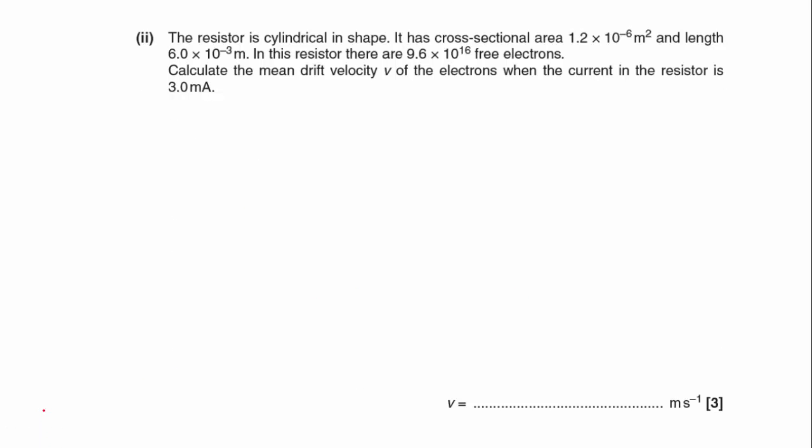Okay, let's move on to part two. The resistor is cylindrical in shape, has a cross-sectional area of 1.2 times 10 to the minus 6 meters squared, and a length of 6 times 10 to the minus 3 meters. In this resistor there are 9.6 times 10 to the 16 free electrons, and we've got to calculate the mean drift velocity V of the electrons when the current in the resistor is 3 milliamps.